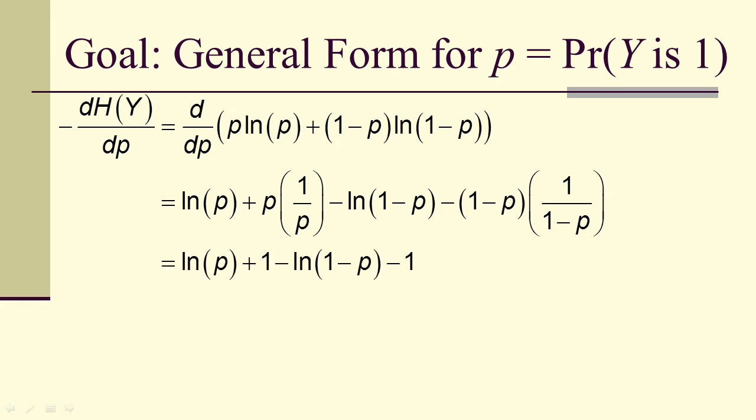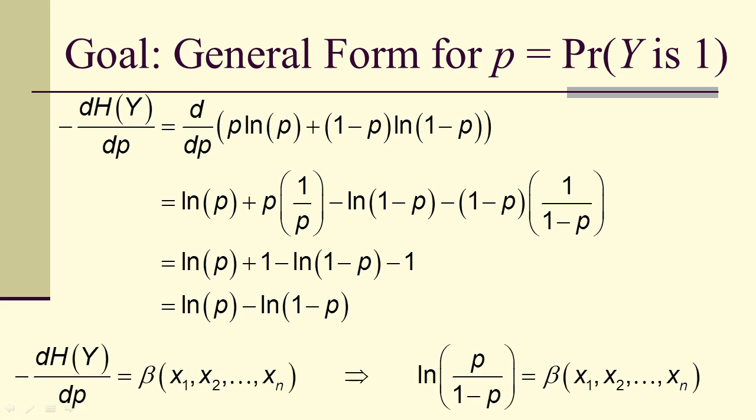We get some cancellation. And now we're going to get some additive cancellation, a plus 1 and a minus 1. And now we have the difference of these two logarithms. And that means that our general form for a model corresponds to the natural log of P over 1 minus P being equal to some, as yet to be determined unknown function beta of the features.